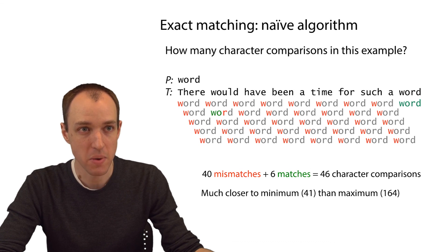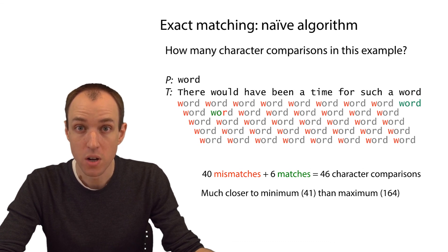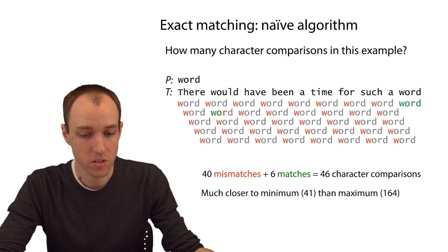if you add up all those matches and mismatches, we end up with a total of 46 character comparisons. 40 of them are mismatches, and 6 of them are matches.